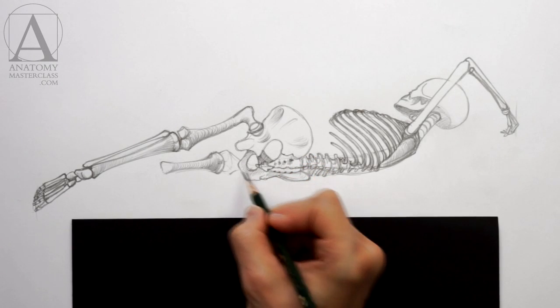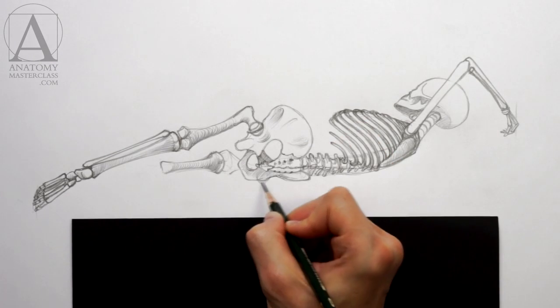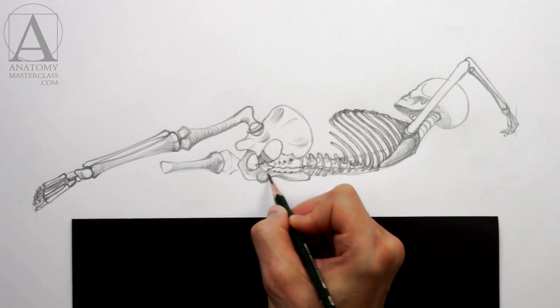The right leg of the model is foreshortened even more, thus it appears much shorter in this drawing.